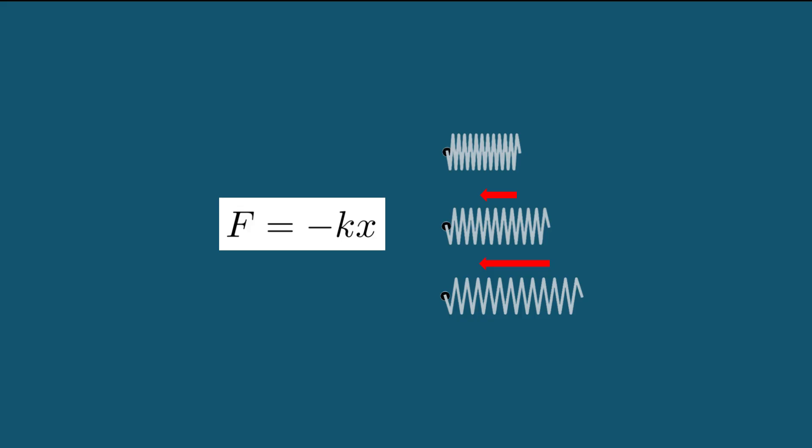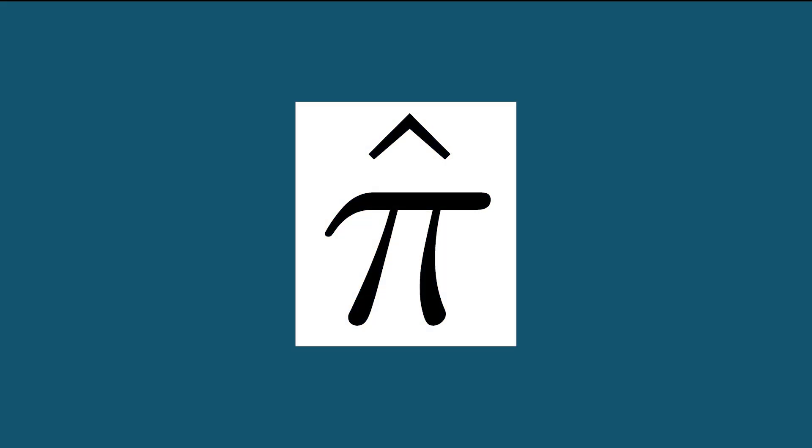So far, we've chosen k, or the stiffness of the spring, to be one. Could we find a value of k that lets us choose when we first cross zero? A different value for pi? Let's define pi hat as the first positive time where the mass crosses zero.